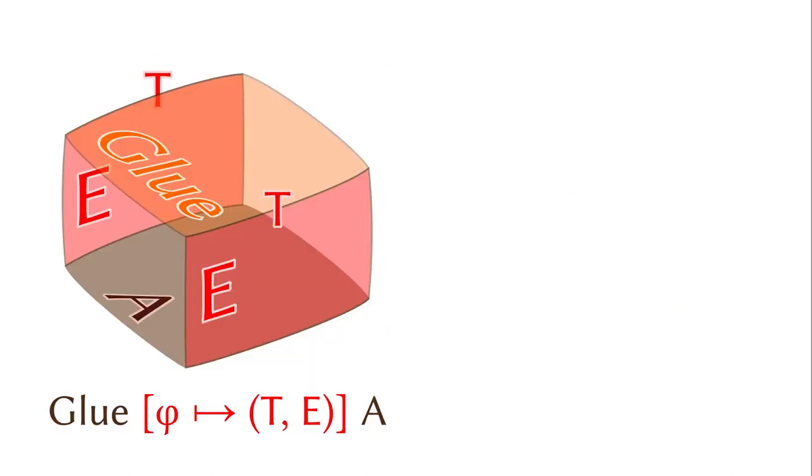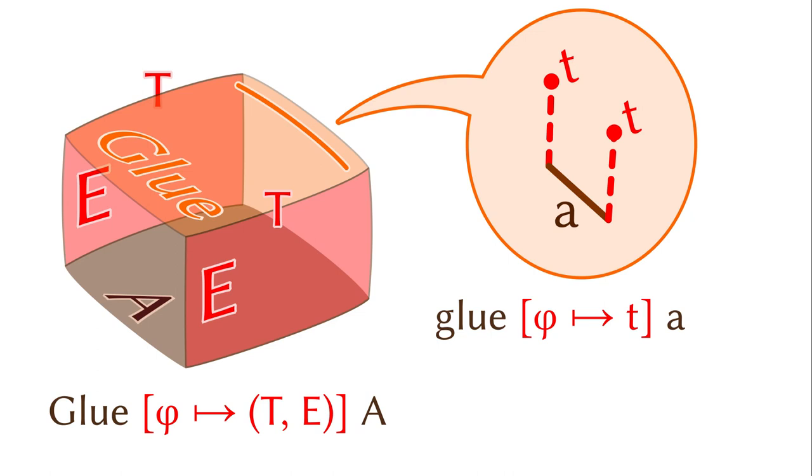Before diving into the con-operations, let's discuss the elements of a glue type first. There is only one constructor, called glue, in the glue type.